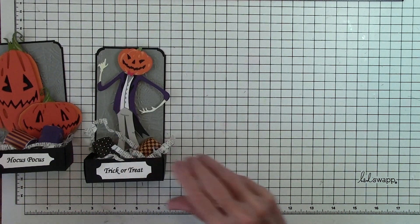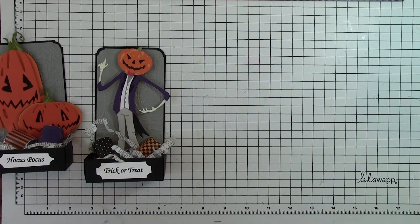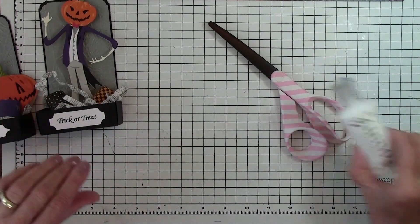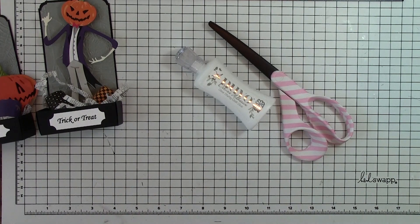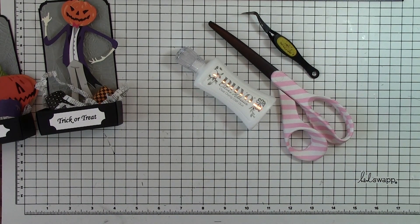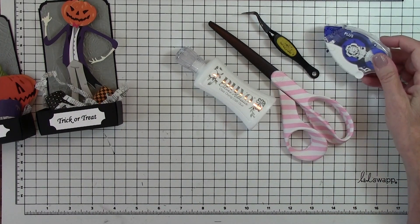So let me set them aside and these are the items that you're going to need to complete this. You need a scissor, some liquid glue, I used a tweezer, some regular adhesive.